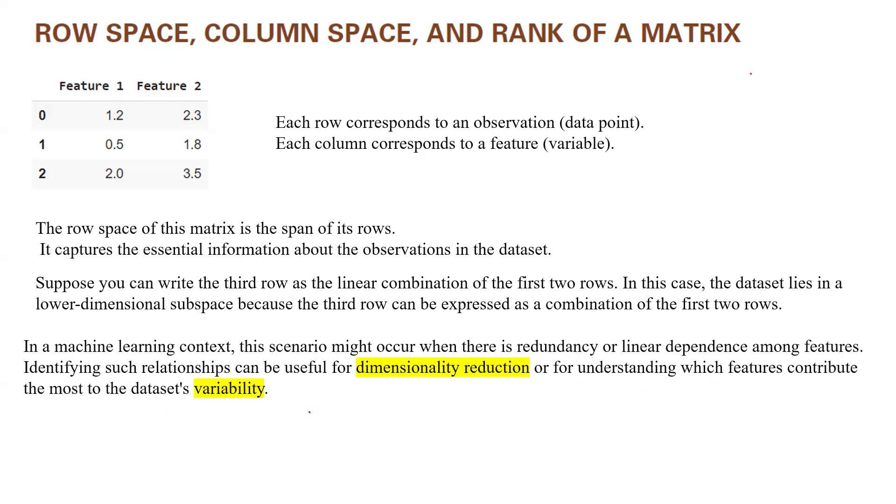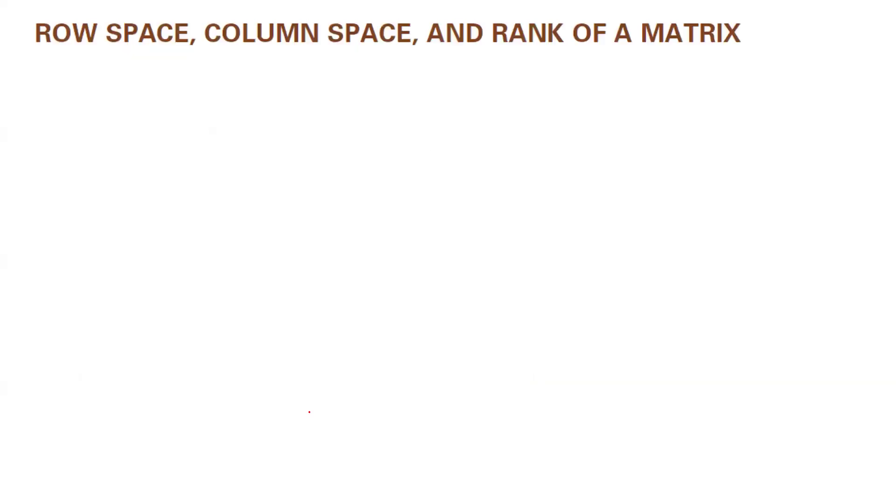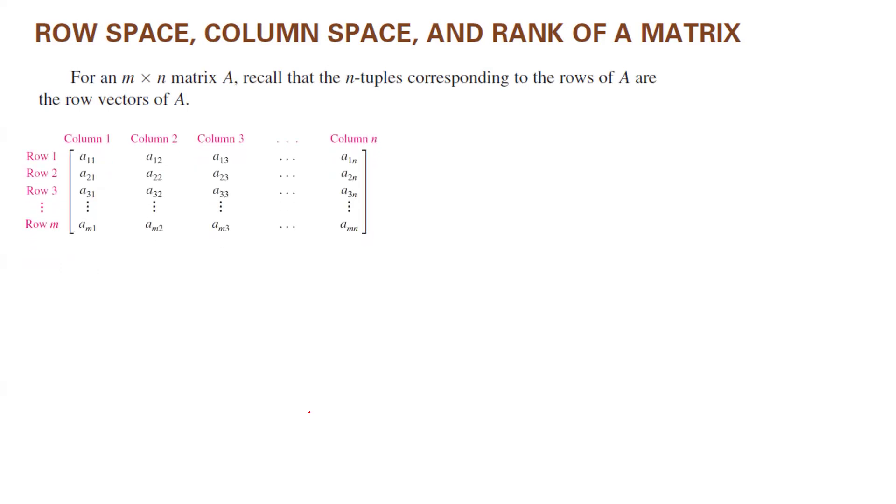Okay, with this introduction, let's go over and define important definitions and go over some theorems and examples for you. For an m by n matrix, remember the way that we defined the matrix. It's a rectangular array with some rows and some columns.